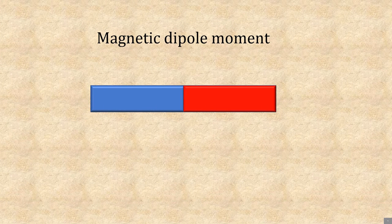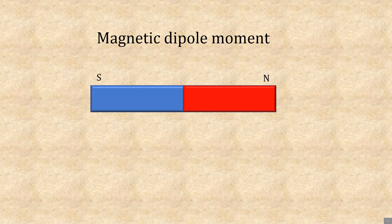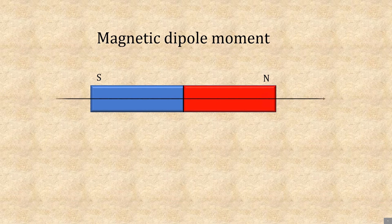For that, let's consider a bar magnet having north and south poles and an axis. Let O be the geometrical center of the bar magnet and axis.